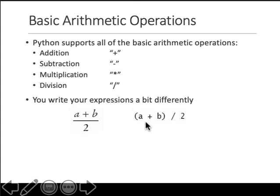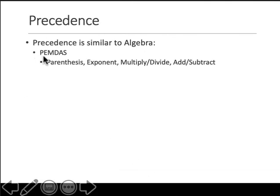If you just write a plus b slash two, that will make b over two, like a plus b over two, right? Not a plus b whole over two. So if you want the whole, you put it inside parentheses. Like I said, it follows the PEMDAS rules of operator precedence.